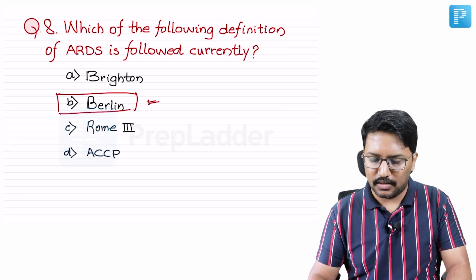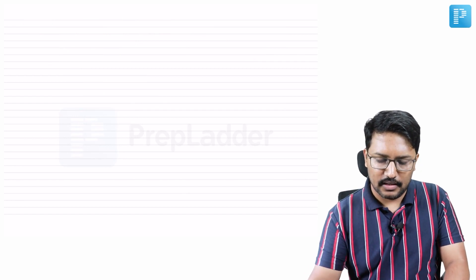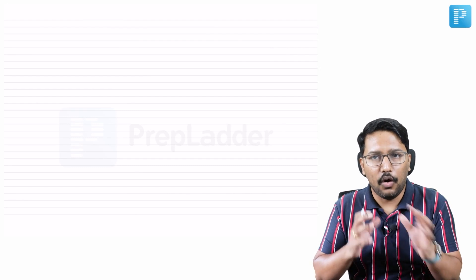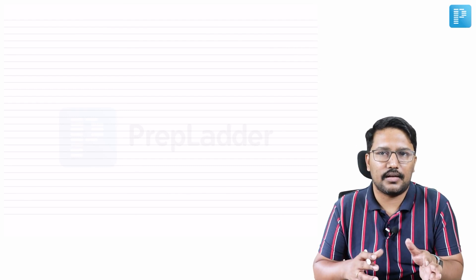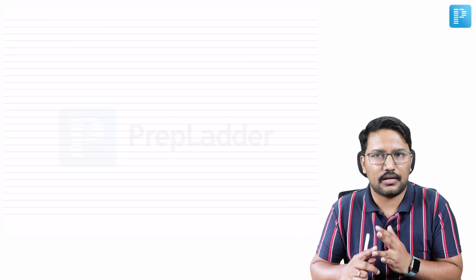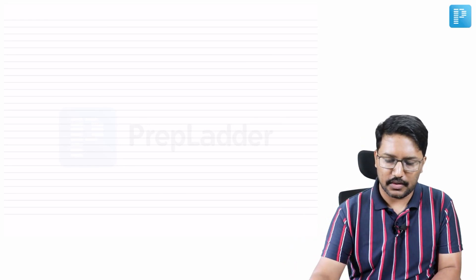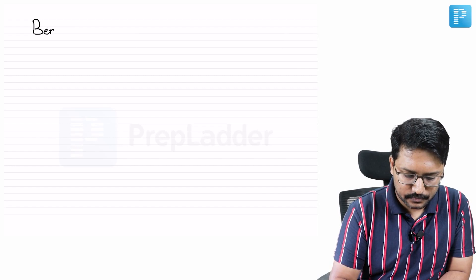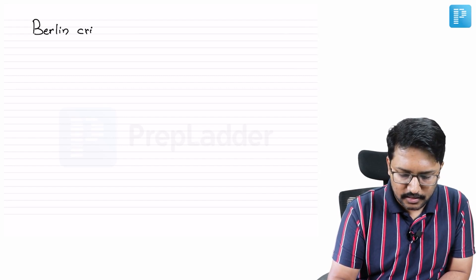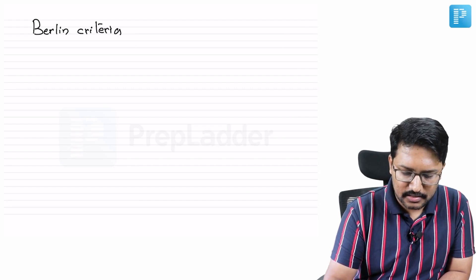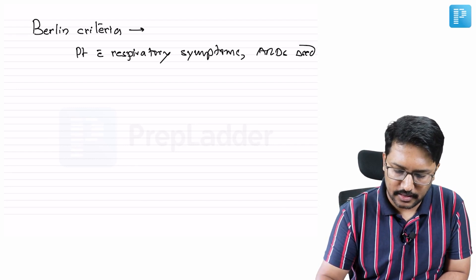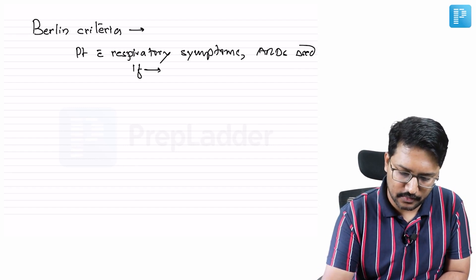What are we doing in the Berlin criteria for the diagnosis of ARDS? A few important things. The Berlin criteria talks about how we diagnose ARDS and how we try to rule out closely related differentials in a simplistic manner. So we have to understand that in a patient who presents with respiratory symptoms, ARDS is diagnosed if the patient meets the following criteria.